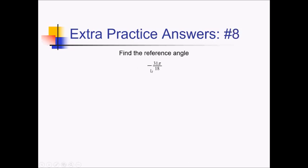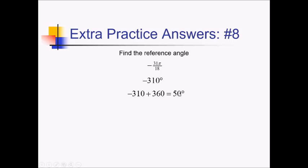To convert this to a reference angle, let's first convert it to degrees. Multiplying by 180 over pi cancels out the pi's, and 180 over 18 is 10; 10 times 31 is 310. So this is negative 310 degrees. Adding 360 to get a positive angle gives me 50 degrees. And 50 degrees is already between 0 and 90, so it's already a reference angle — it already tells us the angle between the angle and the x-axis. So we're done.